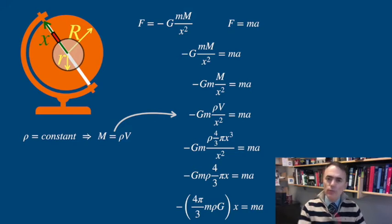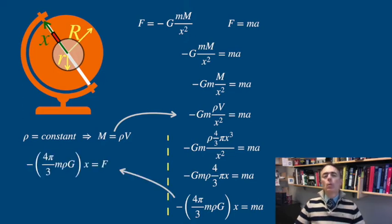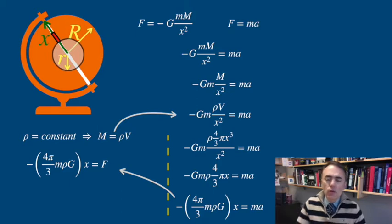Right at the core of the earth, the position is zero and the acceleration is zero, although the speed will be maximum. Now look at this equation. The right-hand side is the force of gravity acting on the transport, and the left-hand side is the negative times a constant times the position.